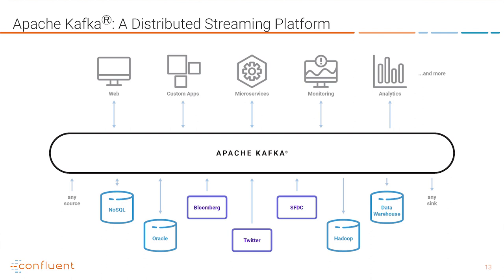Apache Kafka is a streaming platform designed to solve these problems in a modern distributed architecture. It allows reading, writing, processing, and reacting to data streams in a way that's horizontally scalable, fault tolerant, and simple to use.